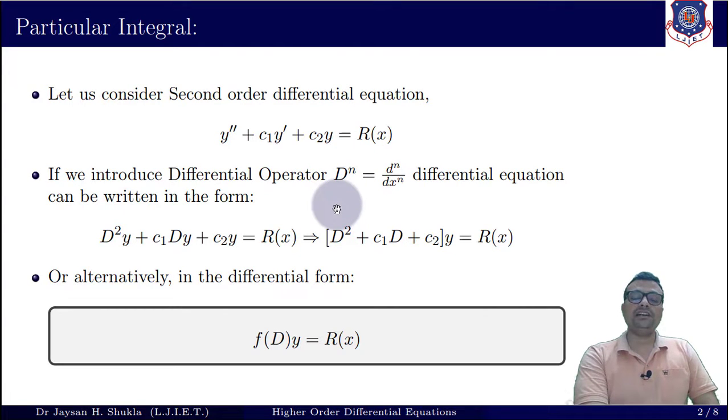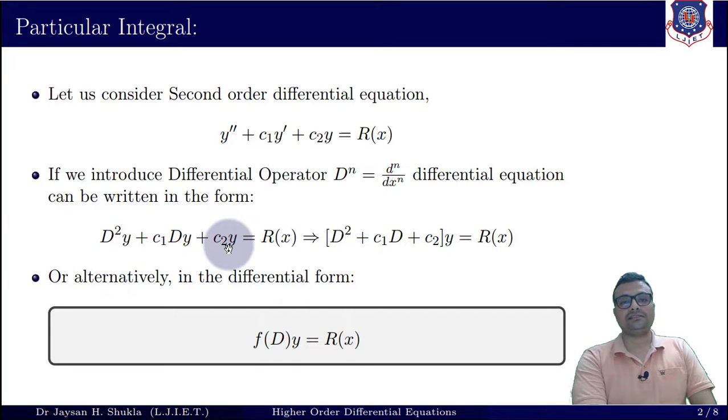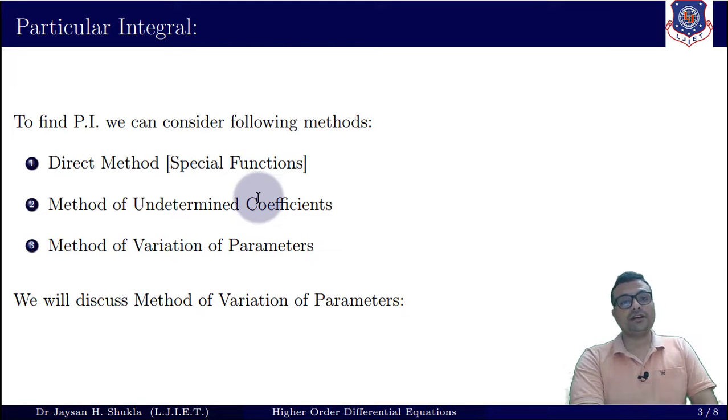Now if we define operator d/dx as capital D, then nth order derivative is dⁿ/dxⁿ as capital Dⁿ. Defining this operator gives us D²y + c₁Dy + c₂y = R(x). Considering this into operator form gives us f(D)y = R(x). As I told you earlier, we have already seen direct method and method of undetermined coefficients for finding particular integral.